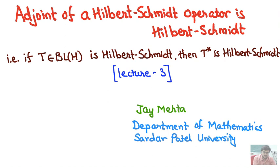You had to prove that the set was closed under addition: if S and T are Hilbert-Schmidt, then S plus T is Hilbert-Schmidt. Also, if alpha belongs to K, then alpha S is Hilbert-Schmidt given that S is. Now in this lecture we show that if T belongs to BL(H) and is Hilbert-Schmidt, then its adjoint T* is also Hilbert-Schmidt.